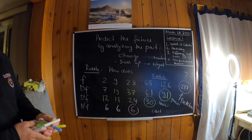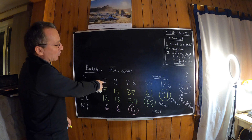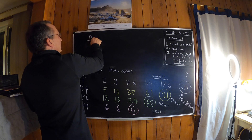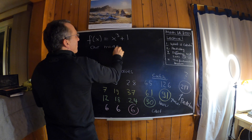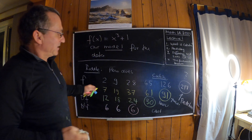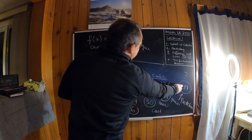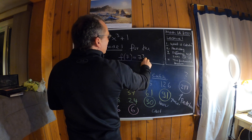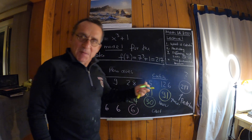We have a function we can use here. Since the growth is cubic, let's try cubes: 1, 8, 27. But you see it's actually just 1 plus that, so we have a function f(x) = x³ + 1. This is our model for the data. Indeed it works: applying it to 1, 2, 3, 4, 5, 6, and if you take f(7) = 7³ + 1 = 217. So we've hit the jackpot and have a really good model.